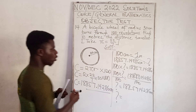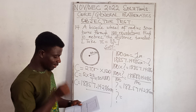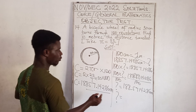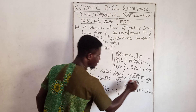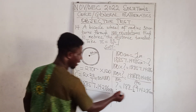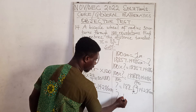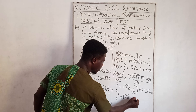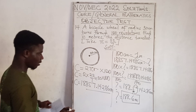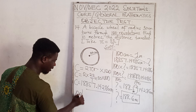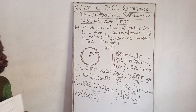Looking at our options, they've rounded to one decimal place. The first decimal is 5, and the next digit is 7, which is 5 or more, so we round up: 188.6 meters. The answer to question 14 is Option D.